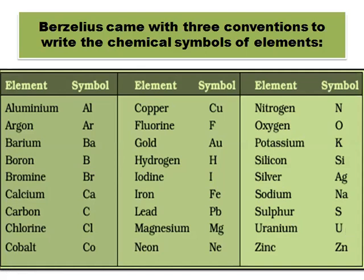The second convention is to take the first letter and the second or any other letter of the element's name. For example, aluminium — symbol Al, which is its first and second letter respectively. Argon Ar, barium Ba, bromine Br, calcium Ca, chlorine Cl — representing the first and third letter of the name. Also cobalt Co, magnesium Mg, neon Ne, zinc Zn, silicon Si.